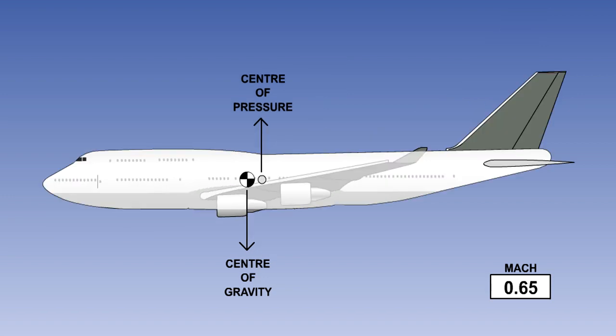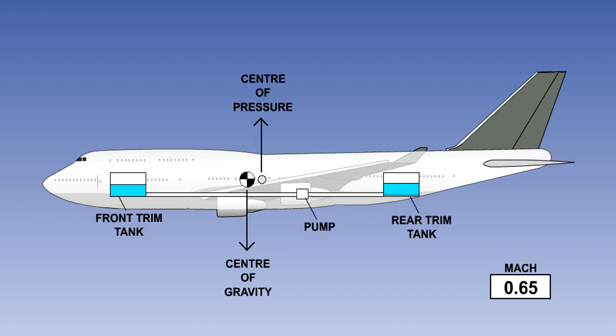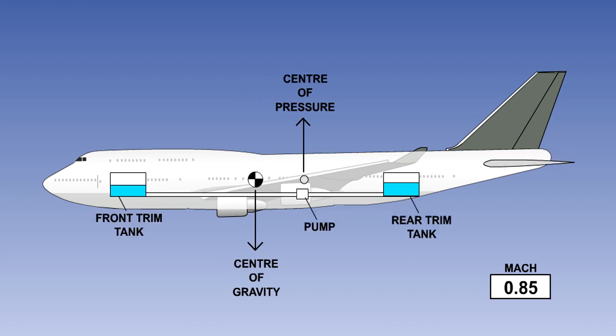The system senses speed increases above a datum MAC number approximately MAC 0.65 but this does vary with aircraft type and through a servo system produces the appropriate movement of the horizontal stabiliser or a fuel transfer to maintain the trim flight position.